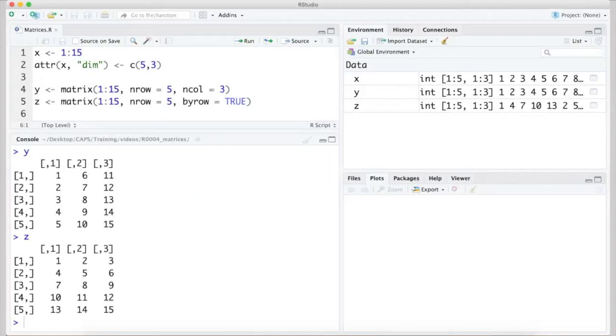We can view the two matrices we just created to see the effect of filling the cells by column, which is the default, and what we did for object Y on top, or by row, which we did for object Z on the bottom.